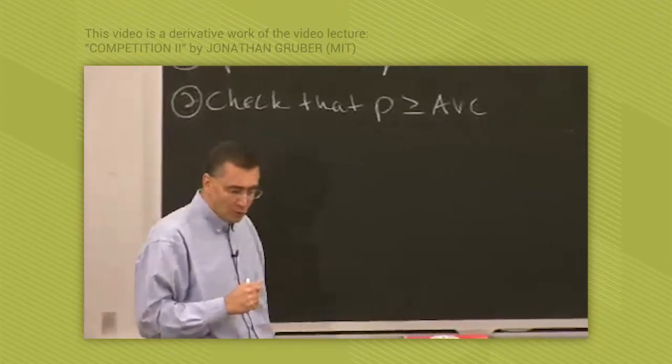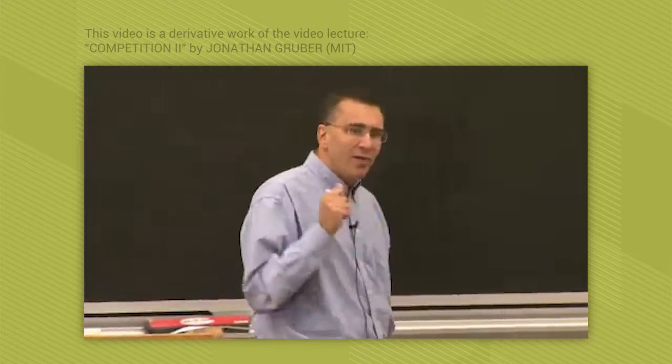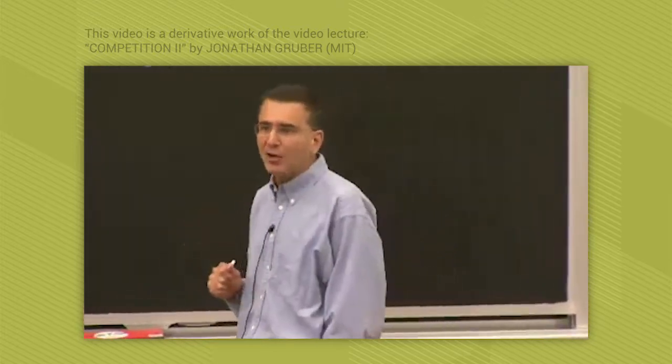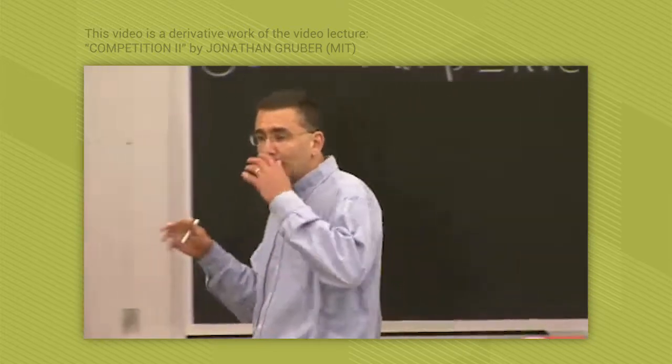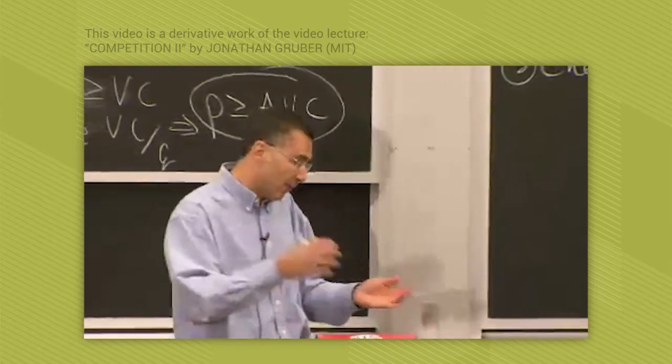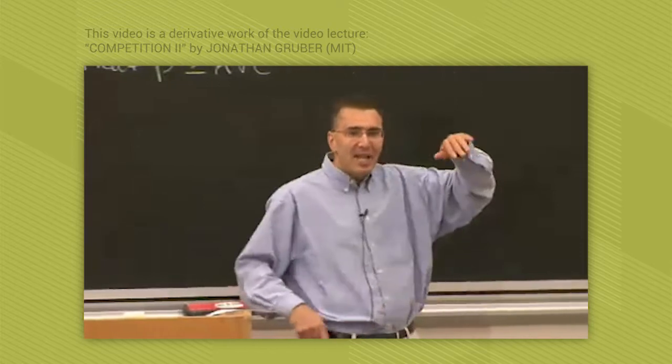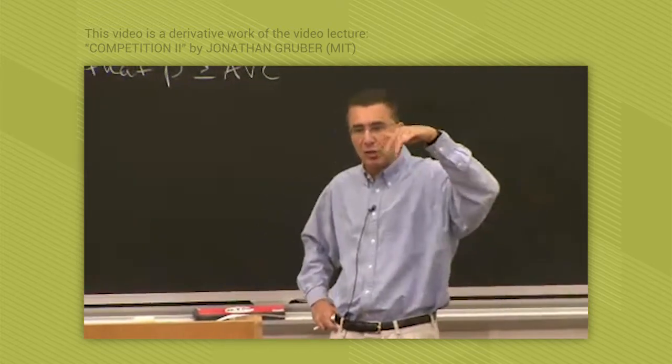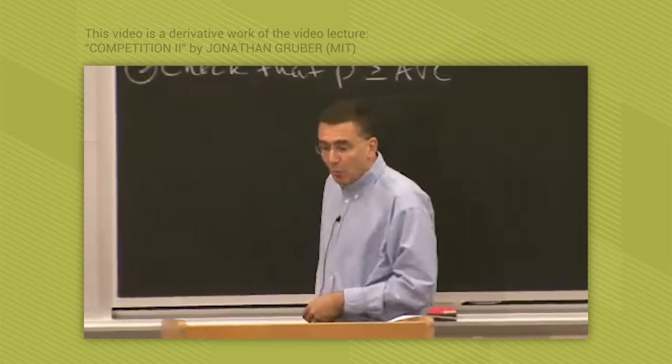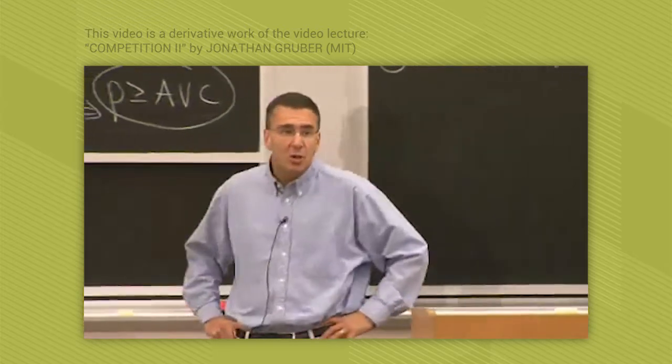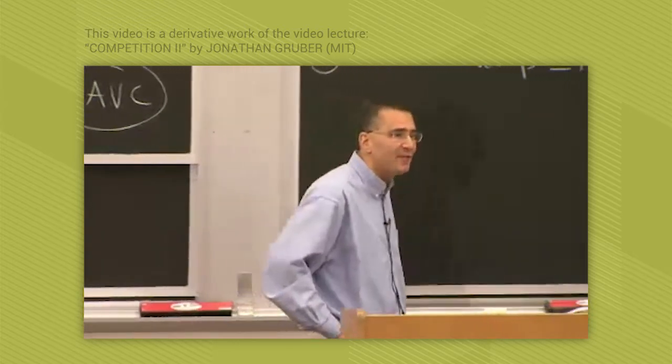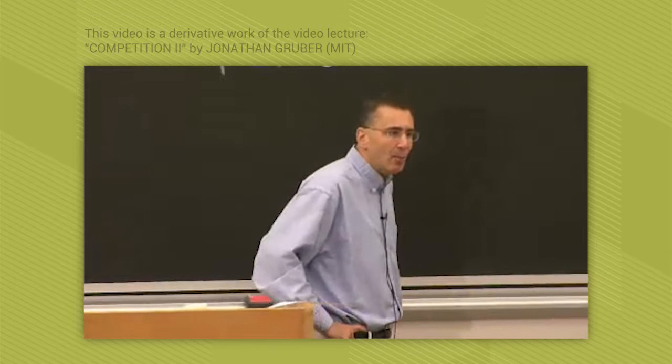Now, armed with these rules, we can finally derive the supply curve. Remember we derived the demand curve last time by getting the tangency at different price ratios with the indifference curves. To derive the firm's supply function, we need to say at different prices, how much will the firm produce?